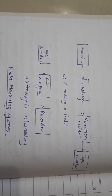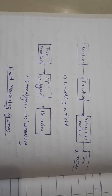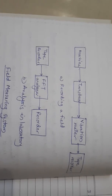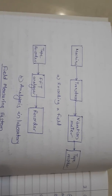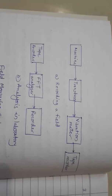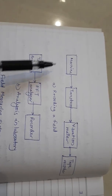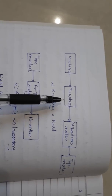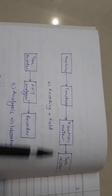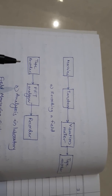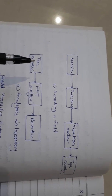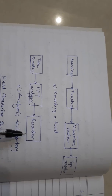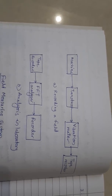This is the block diagram of the field measurement system. The portable condition monitoring system is attached to the transducer, vibration meter, and tape recorder. In the field, the machine is attached to a transducer, vibration meter, and tape recorder. For analysis in the laboratory, the tape recorder is attached to an FFT analyzer and further to the recorder.